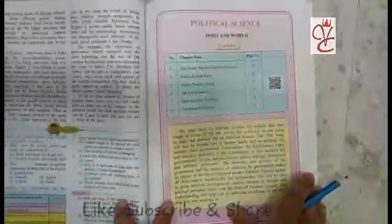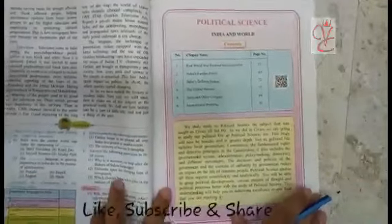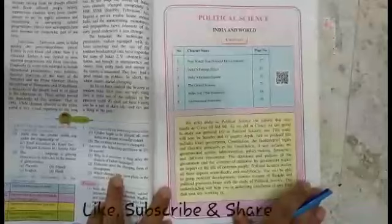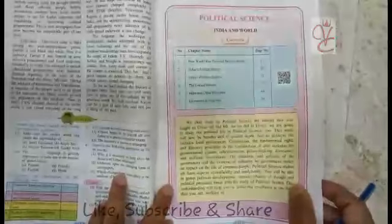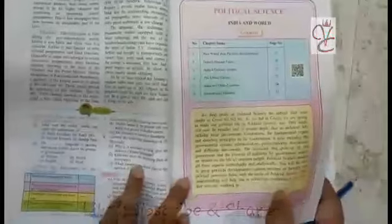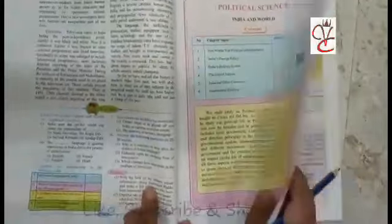This year for Political Science, you have 6 lessons to study. Not a single lesson is omitted, but some parts have been deleted for this year.